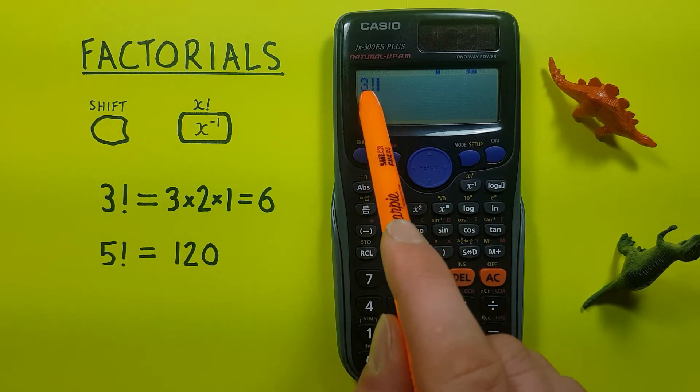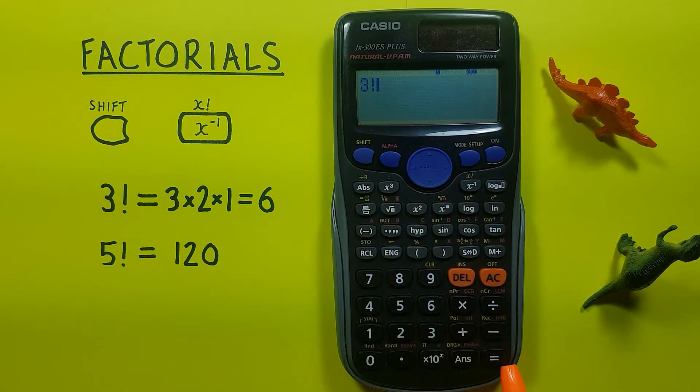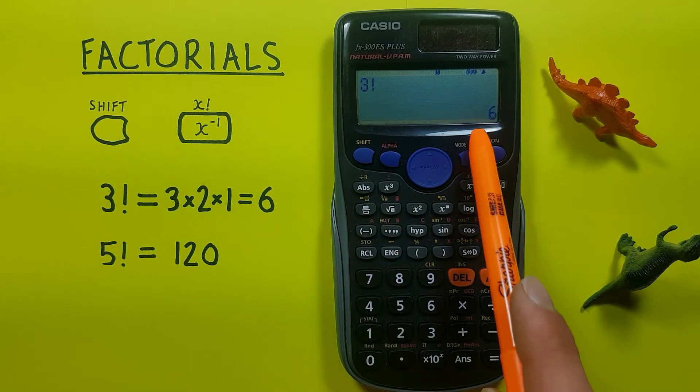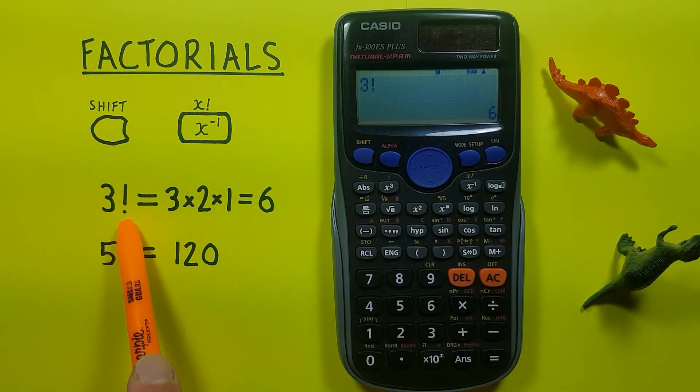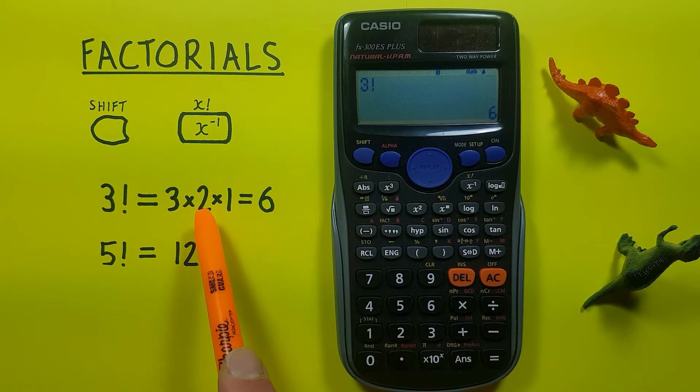Press equals and we see this gives us 6, which we know is correct because 3 factorial is the same as 3 times 2 times 1, which equals 6.